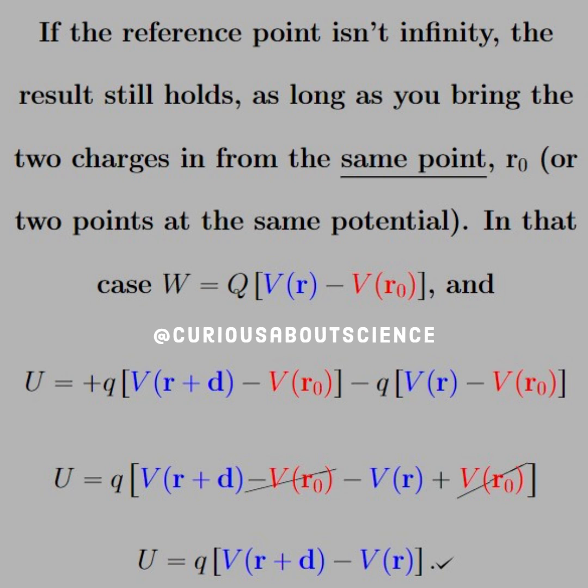we have plus Q at V R plus D minus V R naught and minus Q times V R minus V R naught. And then the algebra solves. Note that the blue in both cases stays the same.